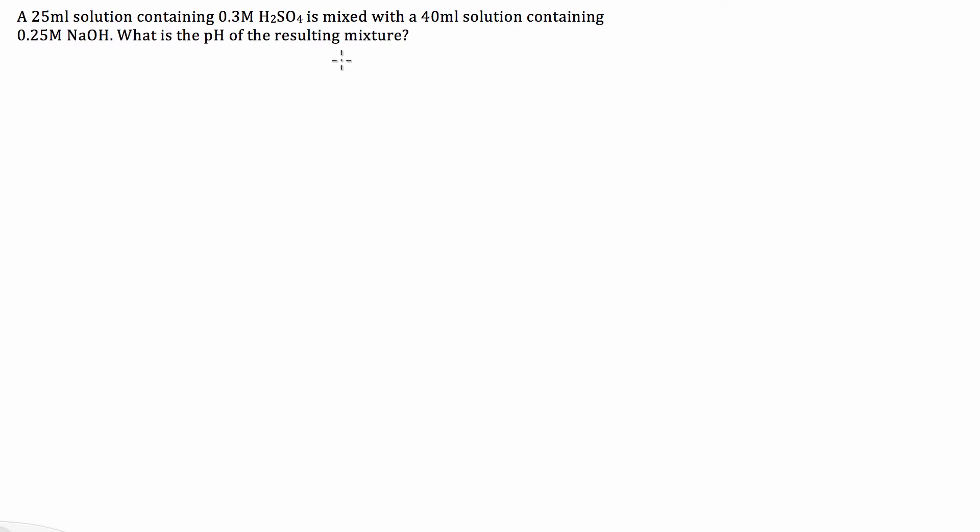Okay, so whenever I do any of these problems, I always write out a balanced equation so I know what I'm dealing with. So let's start by writing our balanced equation. So it's going to be H2SO4 plus 2NaOH that gives Na2SO4 plus 2H2O.